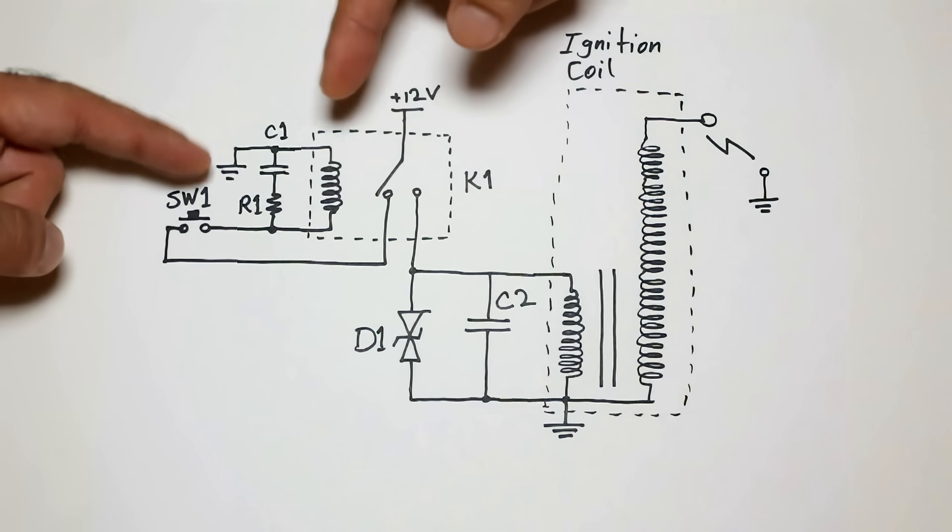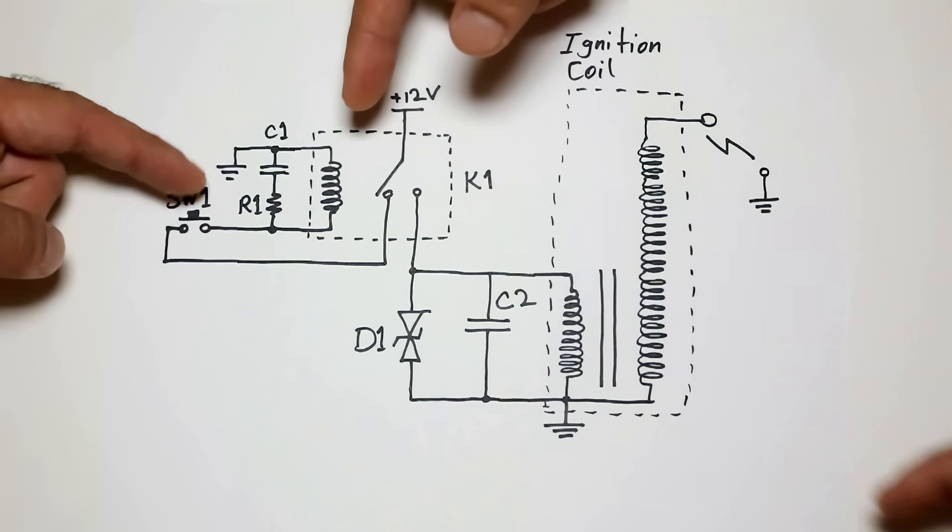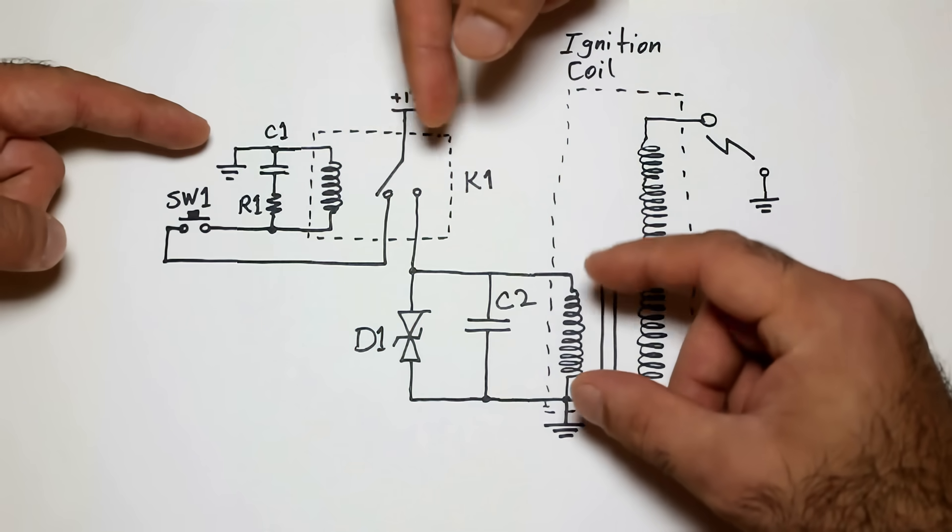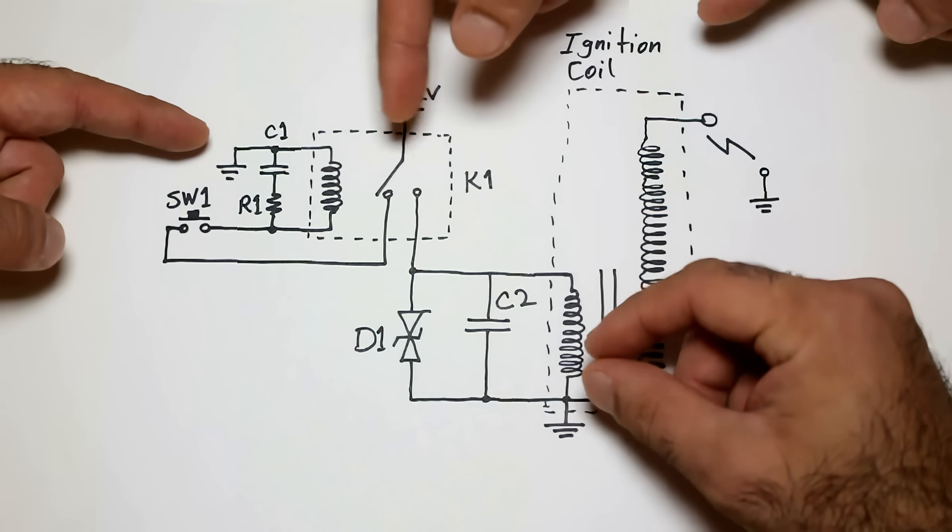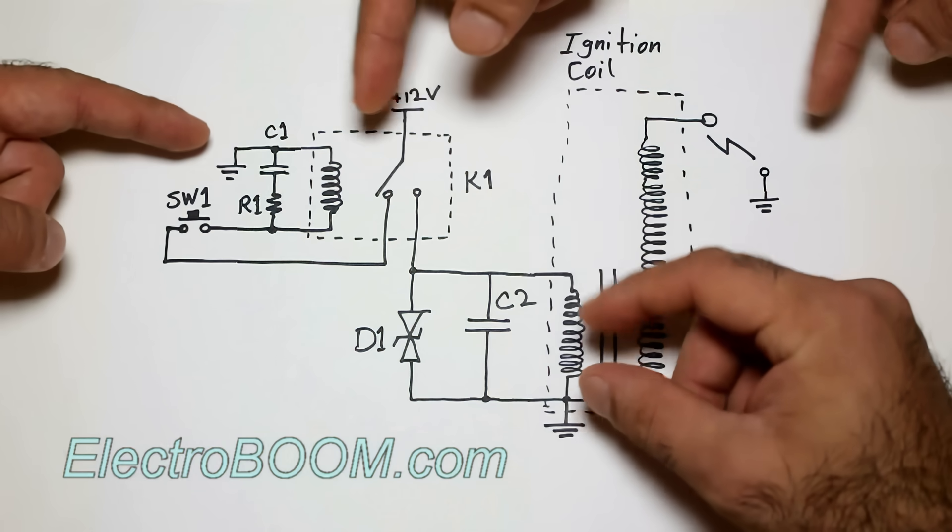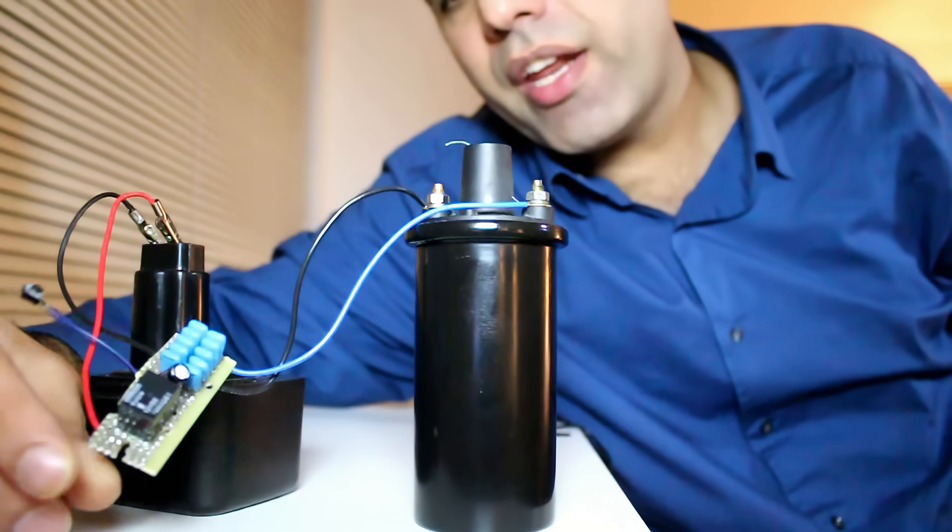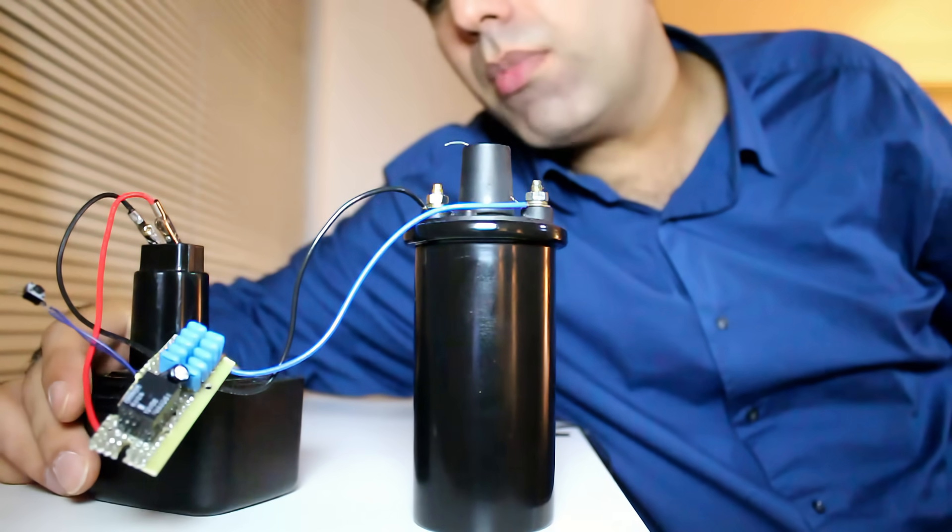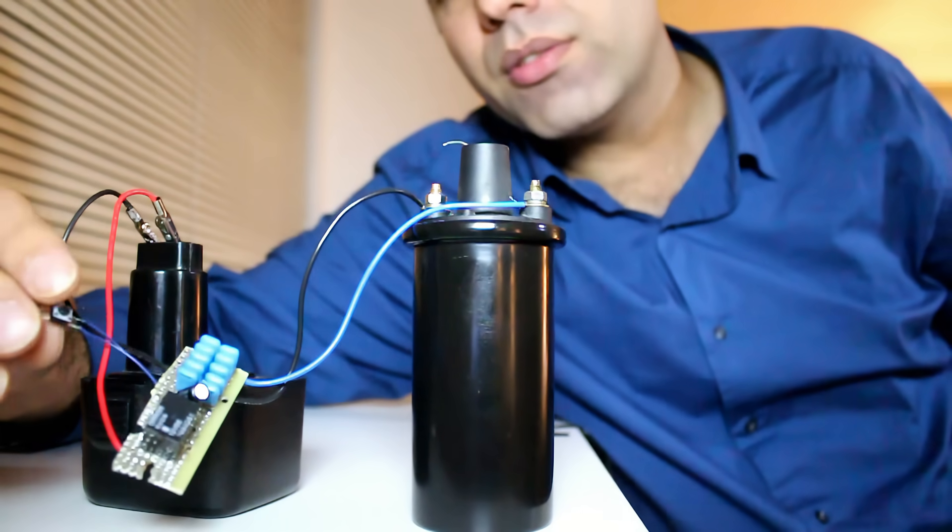Now, I need to make the sparks continuous. For that, I designed a simple circuit. If I press the button here, the relay here will switch back and forth and that will charge the primary of the transformer and the sparks will fly out of the secondary. You can read more about it in my website, electroboom.com. I've made my simple circuit here and I attach it to the primary and I'm using my 12-volt drill battery as the source. Let's try it out.